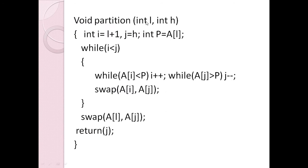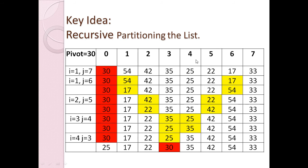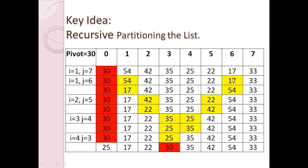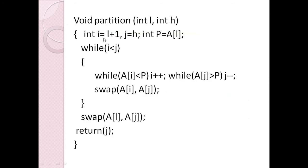Here is the code for the partitioning algorithm. The array a is declared globally. The function takes integer parameters l and h, representing the low and high indices of the portion we want to partition. The pivot p is the first element a[l]. Index i starts at l plus one and j starts at h.